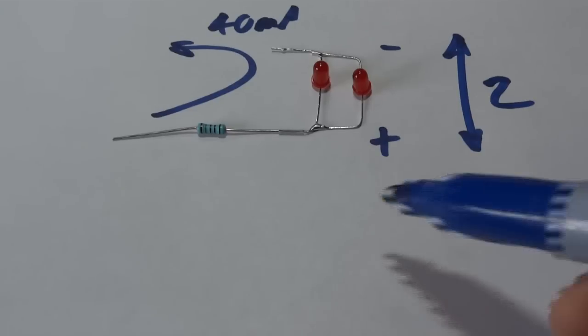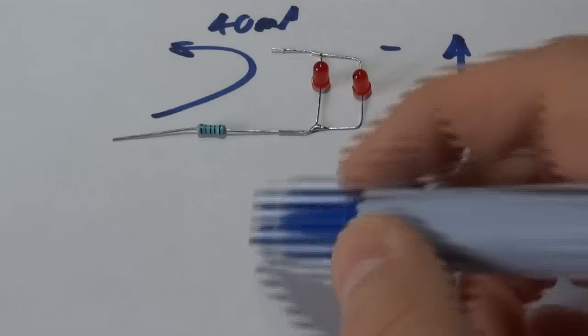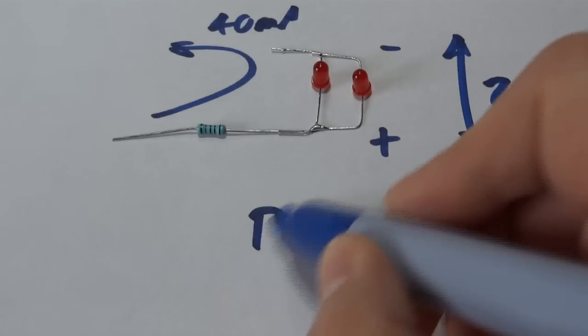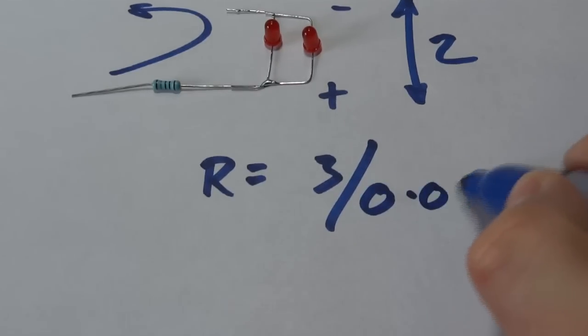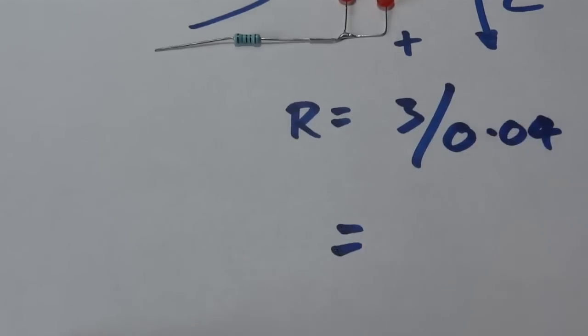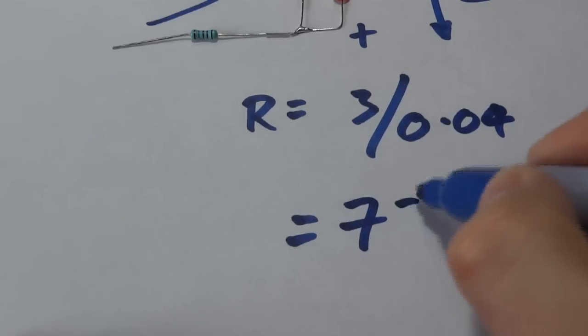So for this calculation, we still have a voltage drop of three as with the first example, but we have 40 milliamps, which is 0.04 amps, which means that our resistance has to be 75 ohms.